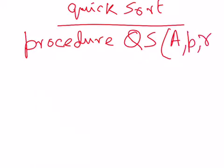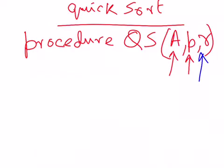If you have gone through the example in the previous video, you will remember that we need the array that we are going to sort, we need the starting position of the array, and also an important element of the array for a call to quicksort — which is the pivot element. So this last parameter r is the pivot element.